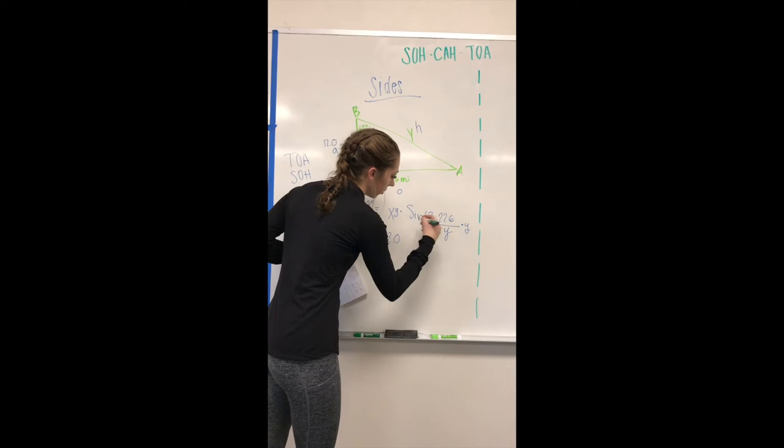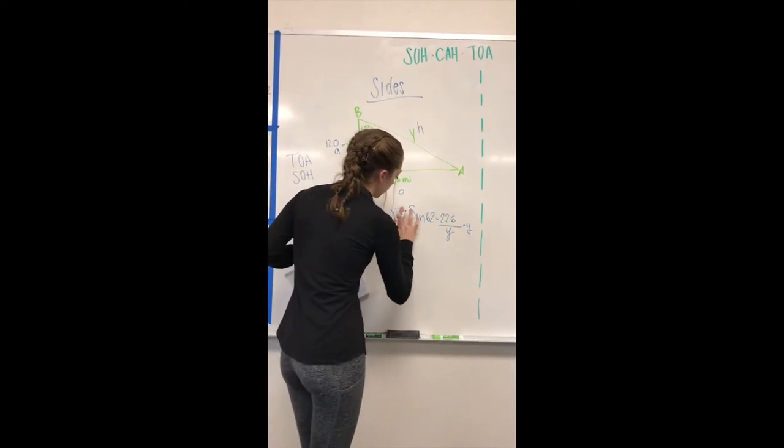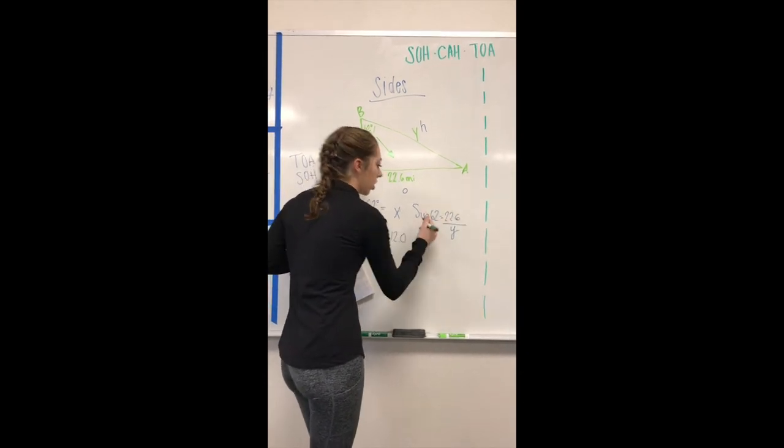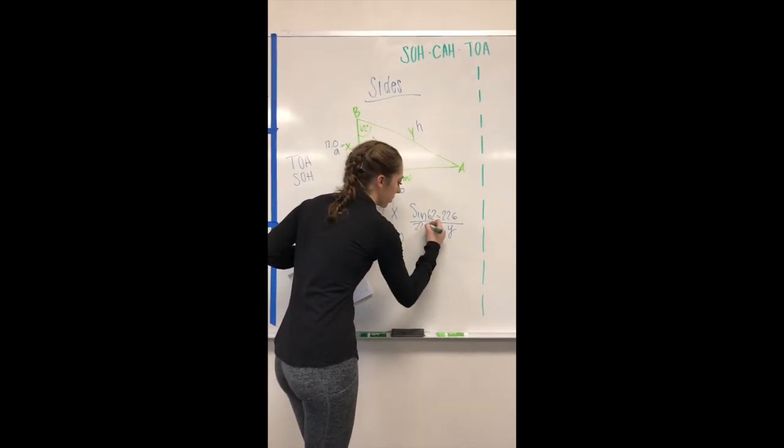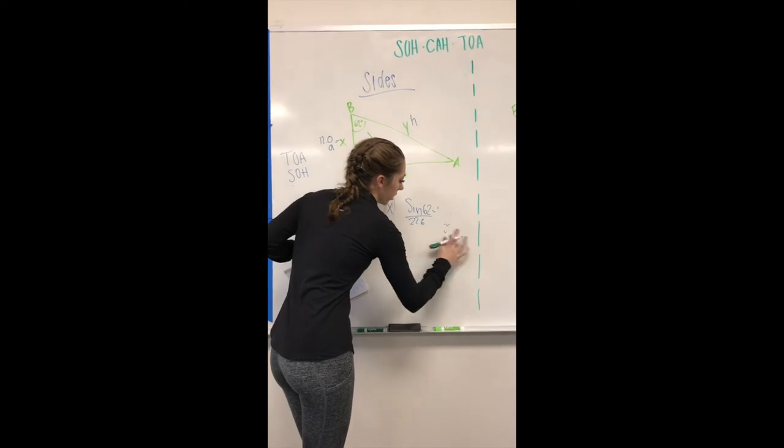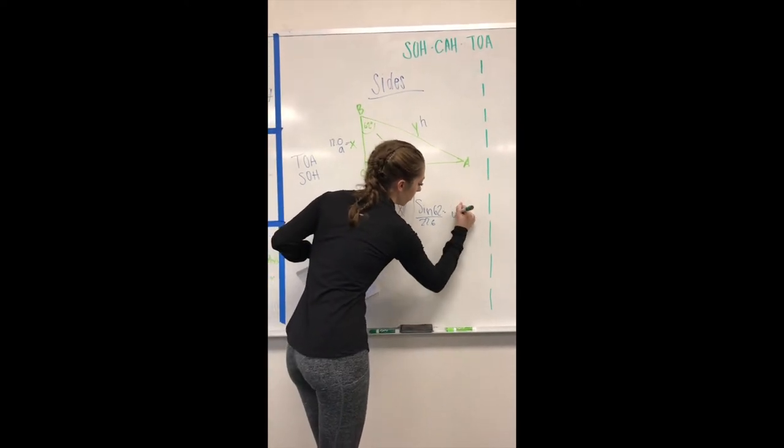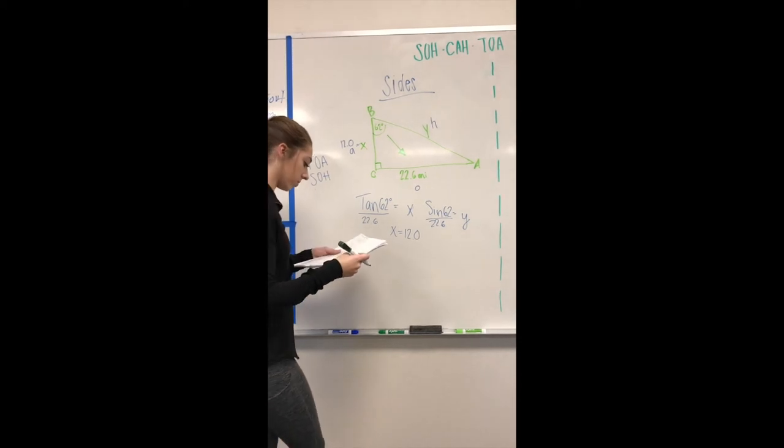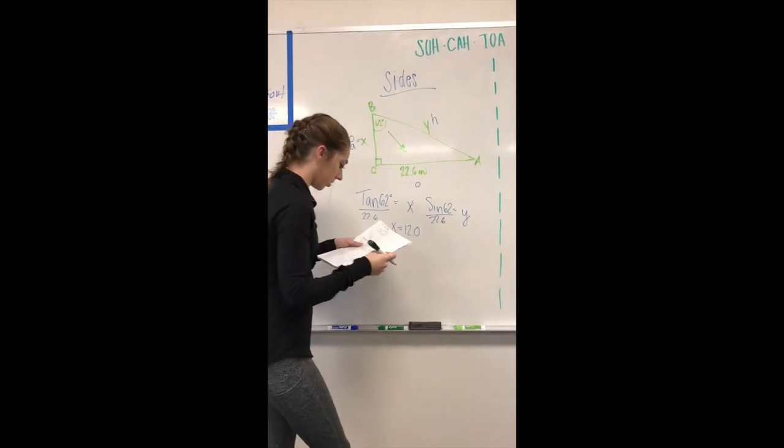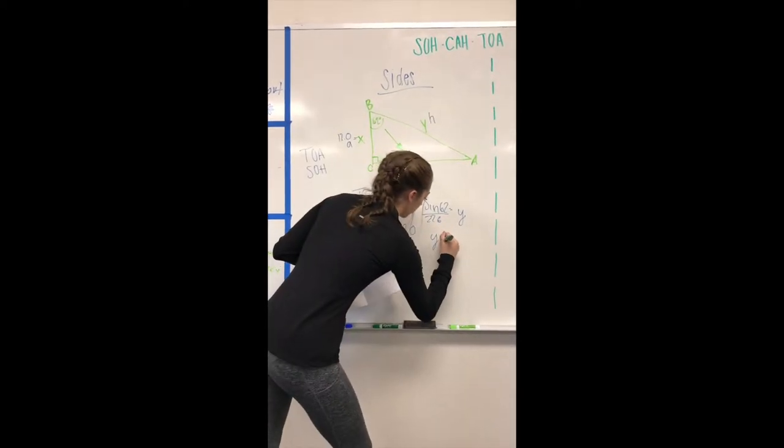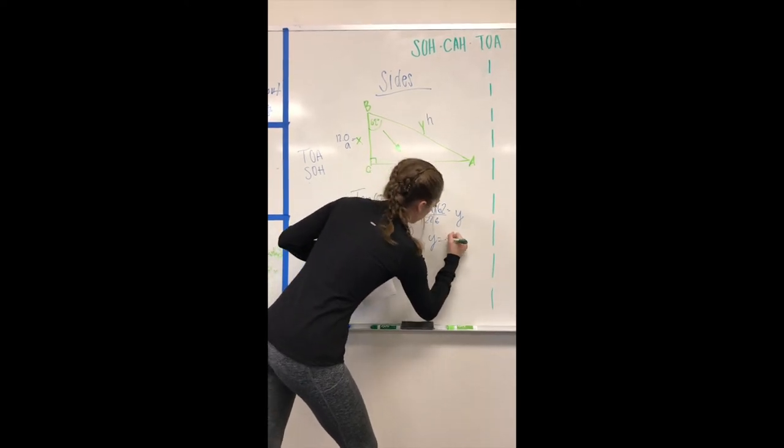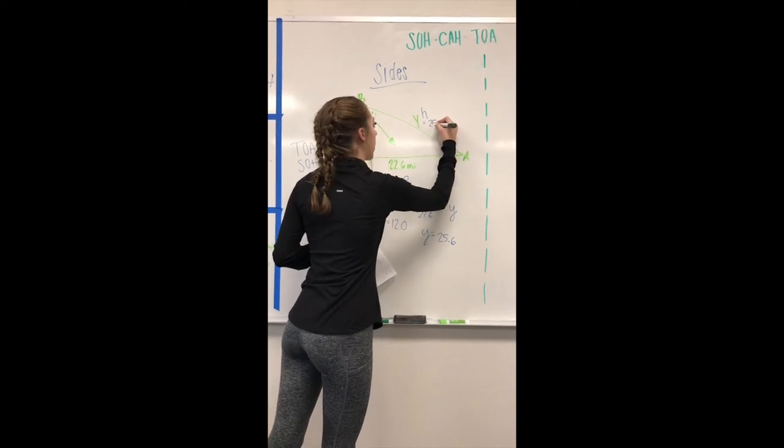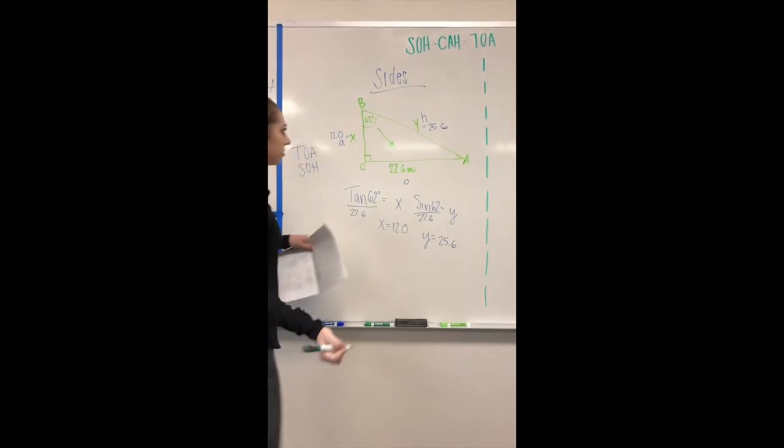As a simpler way, if you know y's on the bottom, you can just automatically put the 22.6 over here and that would equal y. Then you do sine 62 divided by 22.6, and you're going to get y equals 25.6. That's how you find your two sides.